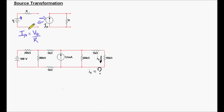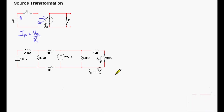So here is the positive side of the voltage source, and the arrow of the current source is pointing to the same direction — it's pointing up — and that works in the same way for the voltage source. So, how do we apply it in circuit analysis?